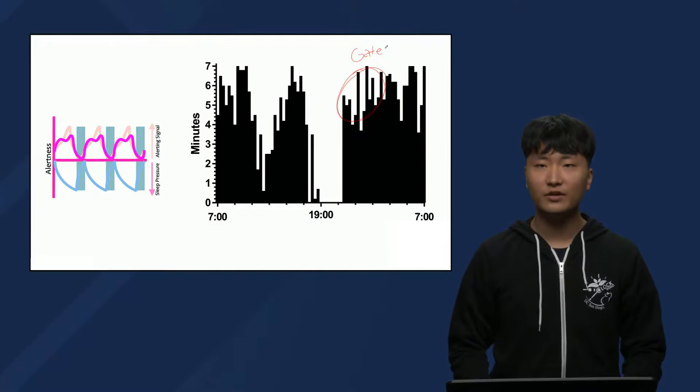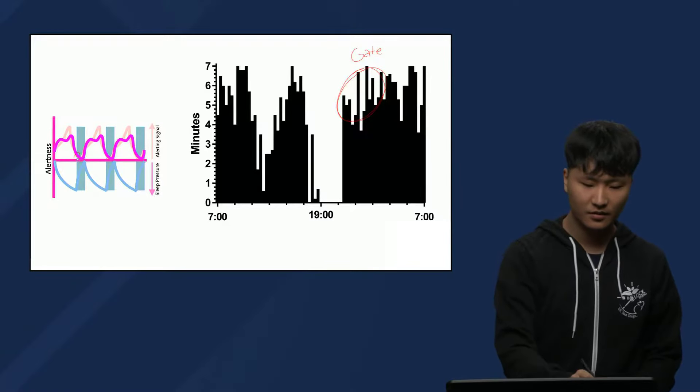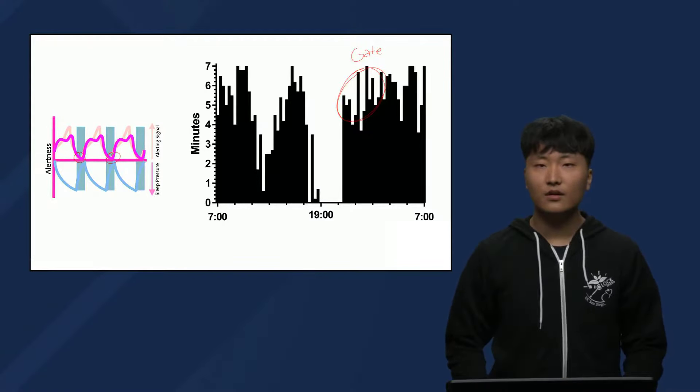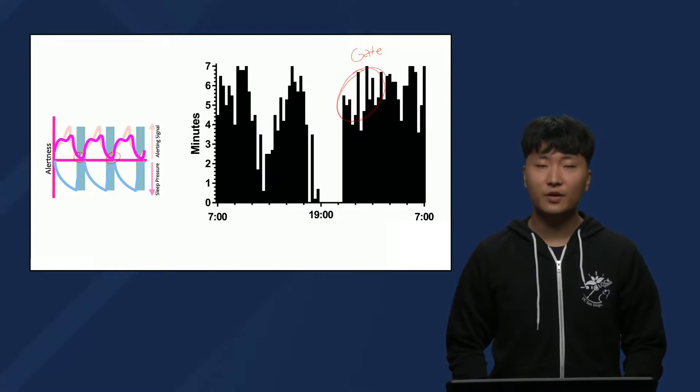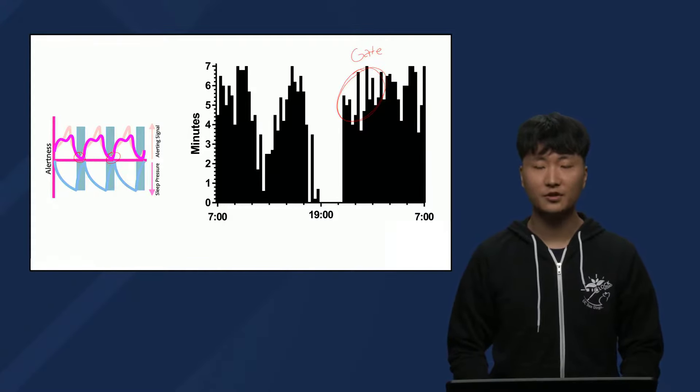Likewise, we see quick drops in alertness after its peak in the two-process sleep model. What Dr. Lavi's paper illustrates is that this is mainly due to the circadian process, or process C, which is regulating and oscillating the sleepiness independent of the sleep pressure.